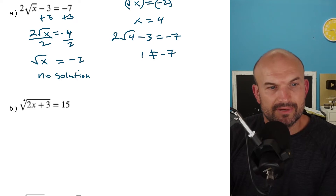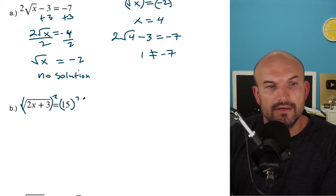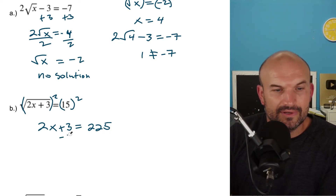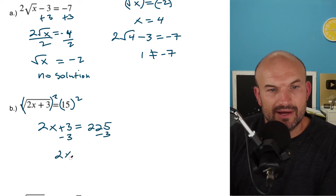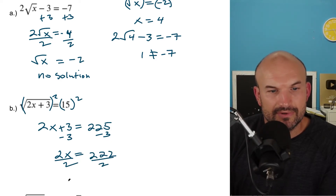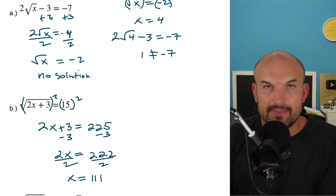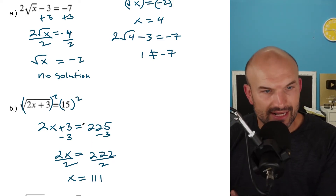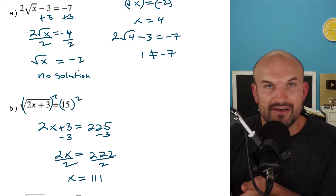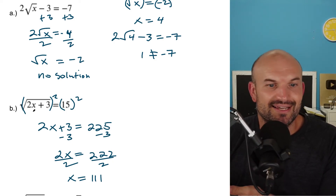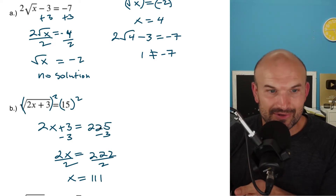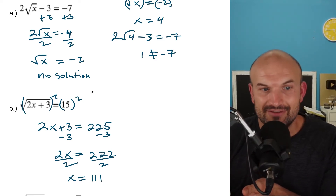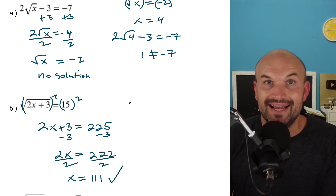In this next example, the radical has already been isolated. So I'll go ahead and square both sides: 2x + 3 = 225. Subtracting 3 from both sides gives 2x = 222. Dividing by 2 gives x = 111. We can check this: 111 times 2 is 222, plus 3 is 225, and the square root of 225 is positive 15. So this answer checks out.